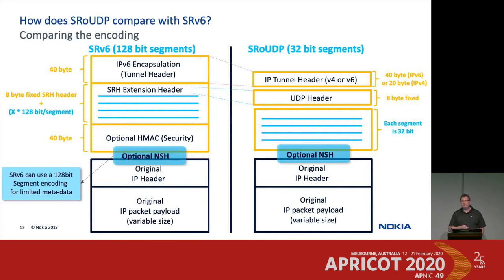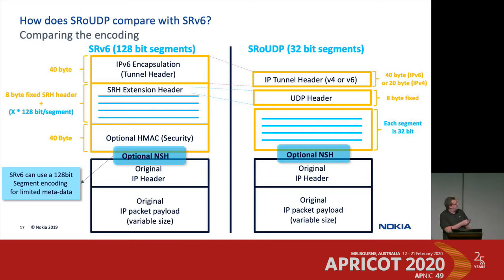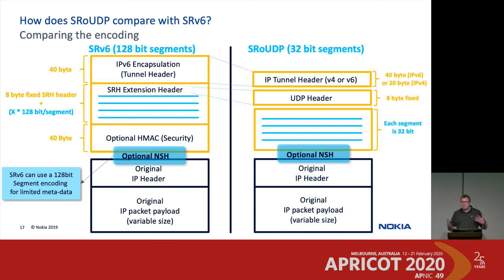Comparing SRv6 (128-bit SIDs) and SR over UDP (32-bit SIDs over native IPv4 or IPv6), they are actually very similar structurally. In SRv6 we have the fixed IPv6 40-byte tunnel header; in SR over UDP we have a tunnel header that can be either 20 or 40 bytes. The SRv6 segment routing extension header (8 bytes fixed) maps to the UDP header (also 8 bytes). Then SRv6 has 128-bit SIDs where SR over UDP has 32-bit SIDs. Looking at it from that perspective, it is actually very similar.